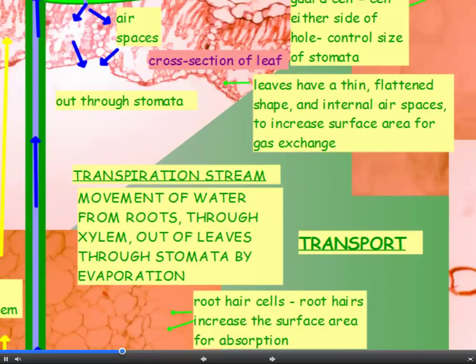So let's have a look at the movement of water in detail. Now this is called the transpiration stream. The definition of the transpiration stream is the movement of water from the roots through the xylem and out of the leaves through the stomata by evaporation.